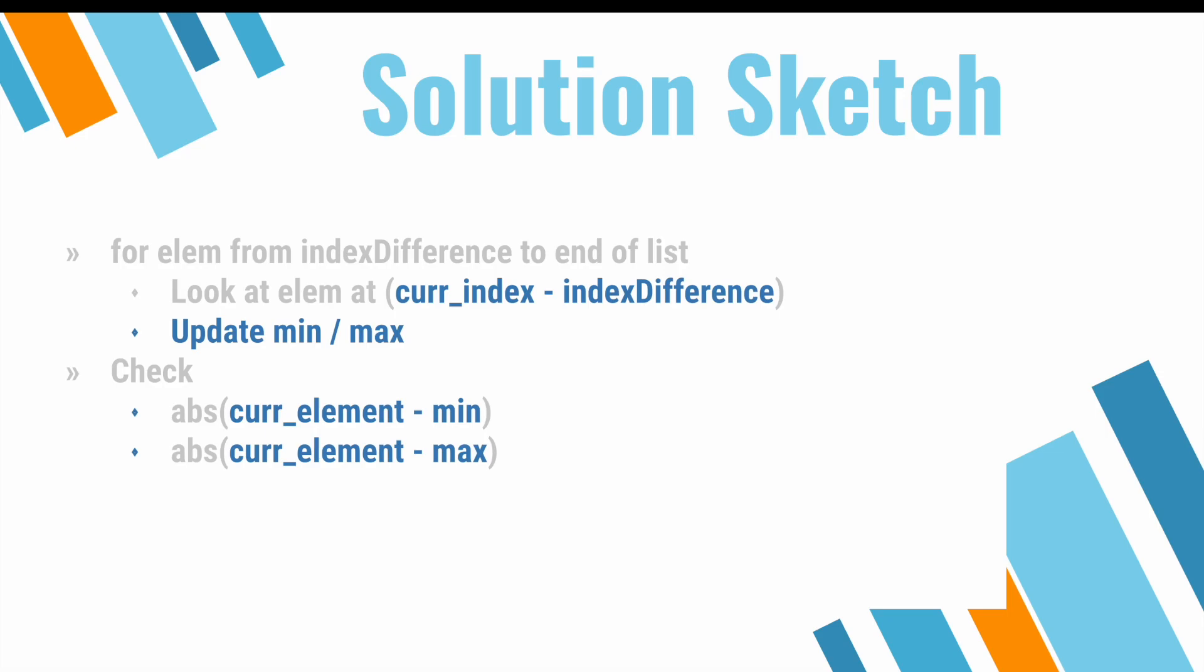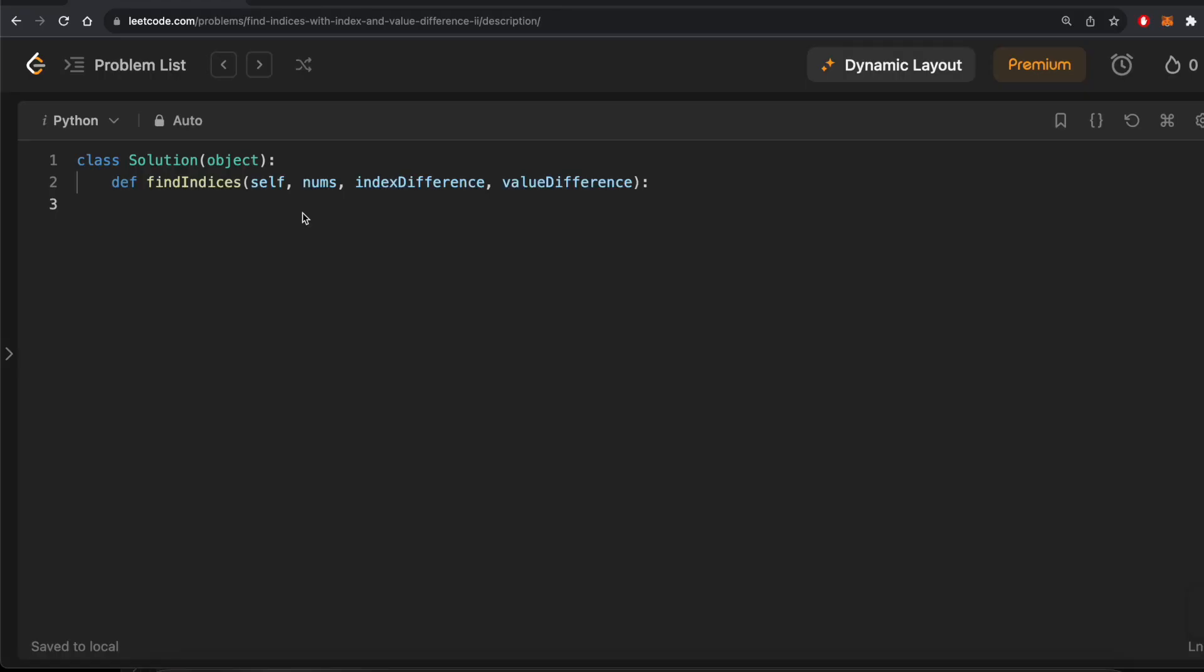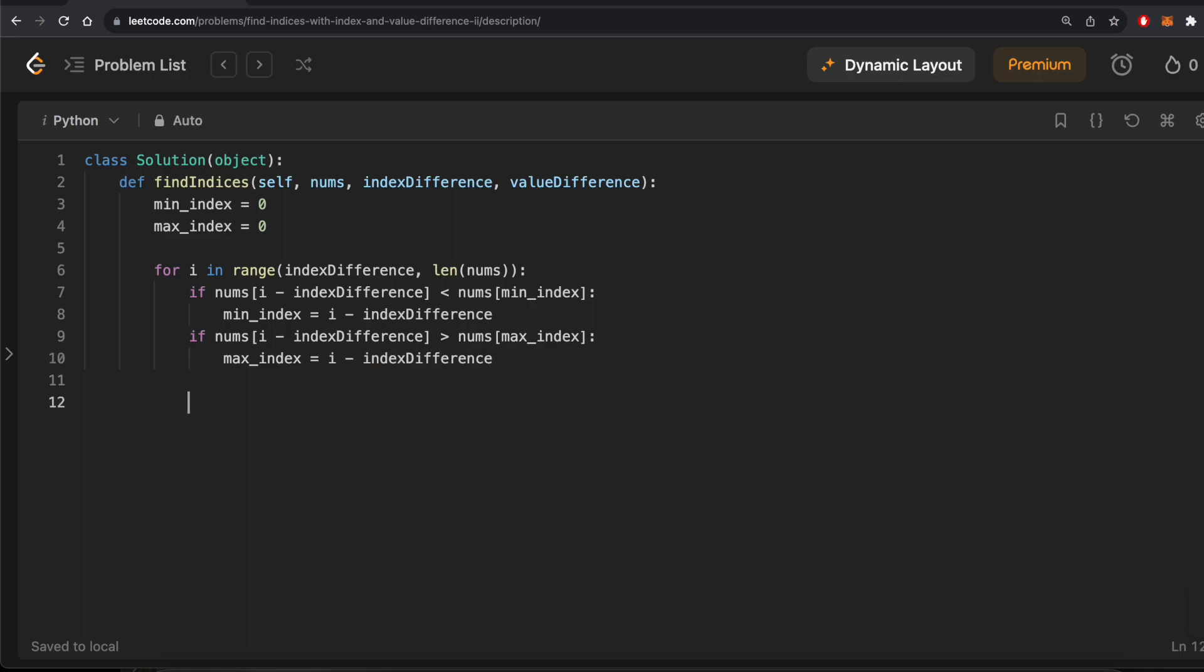Okay, so now we have a framework for our algorithm. Let's jump into the code. Firstly, let's define our min and max indices. We don't need to define min and max values, since we can always look those up by using the nums array and our indices. Then, we'll iterate through our array beginning at index difference, and we'll keep track of the running minimum and maximum by looking at elements only to the left of the current element. Finally, we'll compare the current element to the running minimum and maximum and return the relevant indices if we found them. Otherwise, we return negative 1, negative 1.